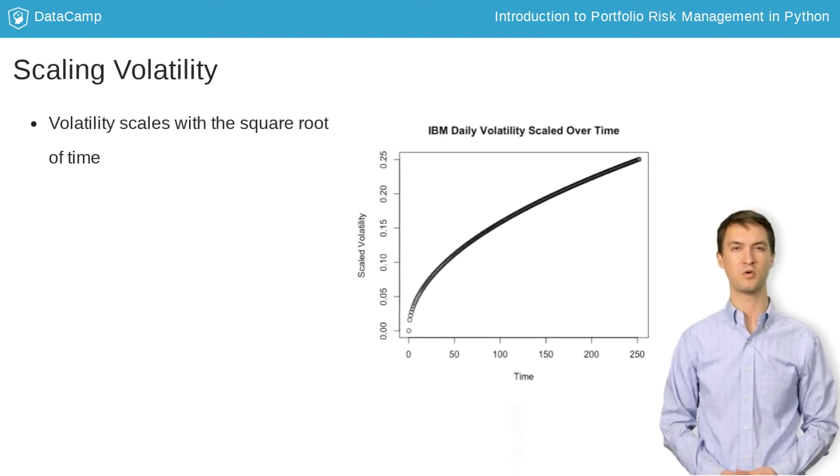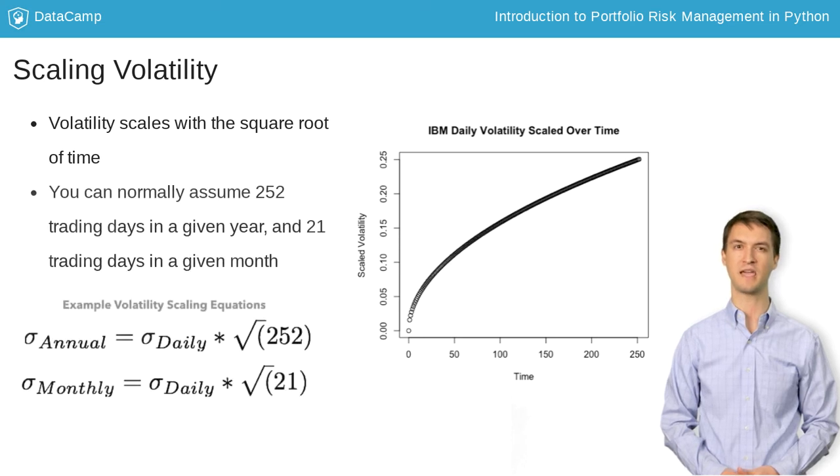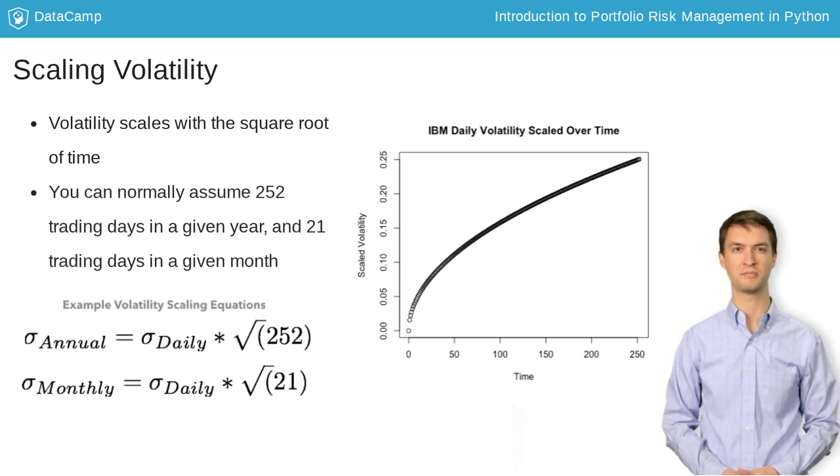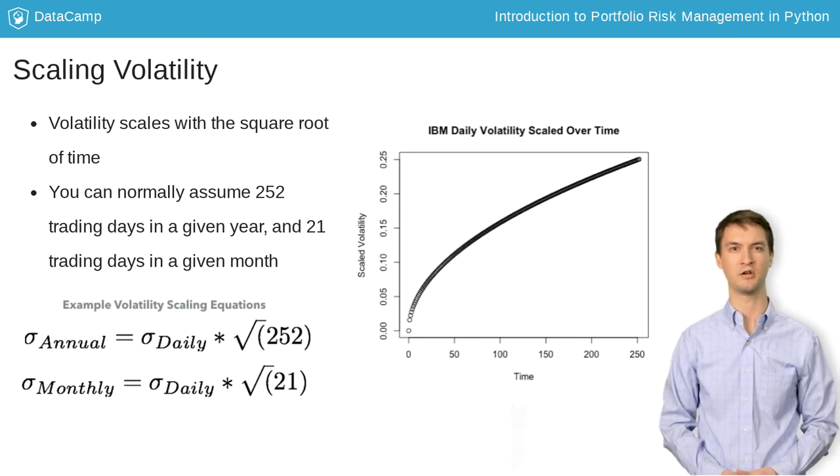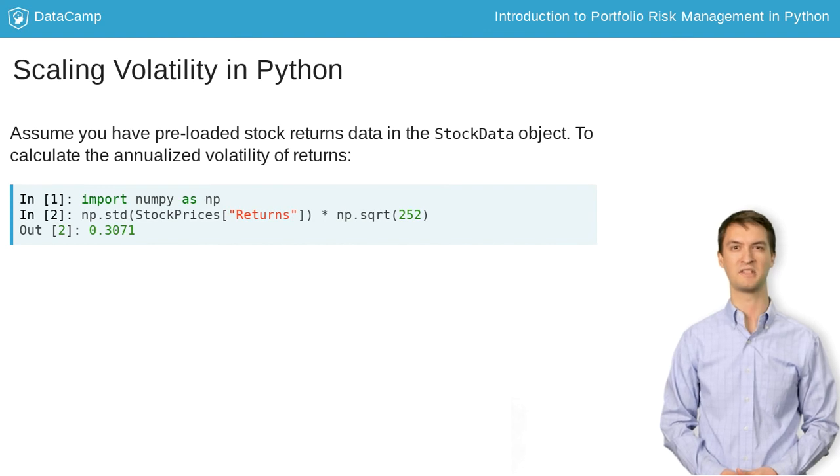It's very important to understand that volatility scales with the square root of time. To properly scale the daily volatility of an asset, simply multiply the volatility by the square root of the number of trading days in a year. This is easy to accomplish using NumPy by simply multiplying the standard deviation of daily returns by the square root of 252.